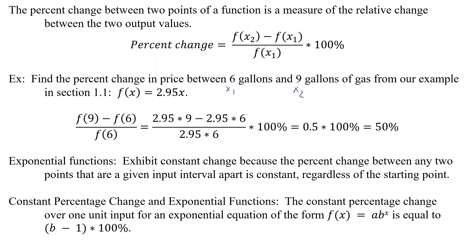So we now plug in six for x and we have that part. And that's also the denominator. So now we plug all that into our calculator. When we do, this is equal to a half. We still take that times 100%. And so then overall, it's 50% is going to be the percent change in price between six gallons and nine gallons of gasoline. And that's again from our example, f of x equals 2.95x.